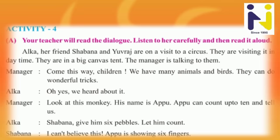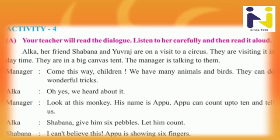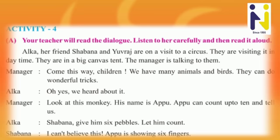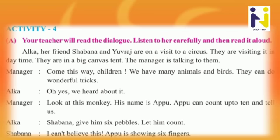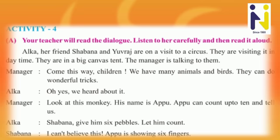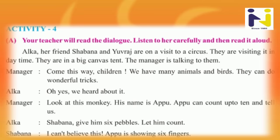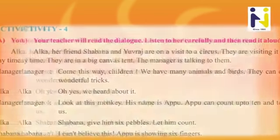Shabana gives the monkey six pebbles. The monkey counts them and gives back the same number. Shabana says: 'I can't believe this!' — 'Ana par vishvas nathi kari shakti.' Appu is showing six fingers — 'Appu chho aangriyo batavi rahyo chhe.'